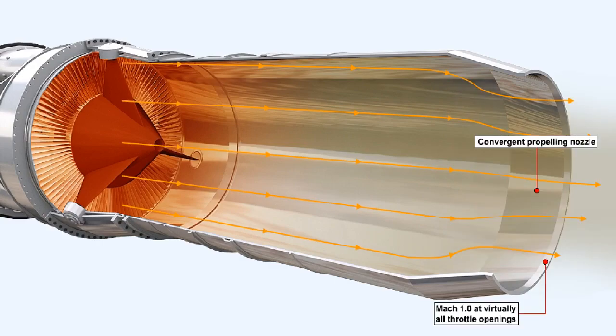The exhaust gases travel down the jet pipe and finally exit to atmosphere via the convergent propelling nozzle. The convergent propelling nozzle increases the gas velocity to speeds of Mach 1, the speed of sound in relation to the temperature of the gases, in a turbojet engine at virtually all throttle openings above idle. At this velocity, sonic speed, the nozzle is said to be choked.